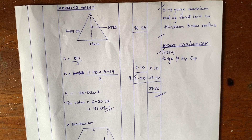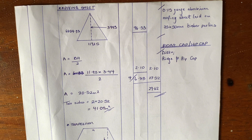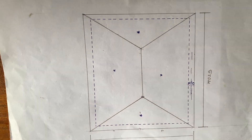Hello guys, welcome back to the Quantity Surveying Workshop and another video. In today's video we are going to be treating the two last members: the area of the roofing sheet, the ridge cap, and the hip cap. To measure the area of the roofing sheet, you need to take into consideration the shapes the roof makes.